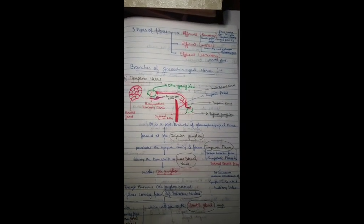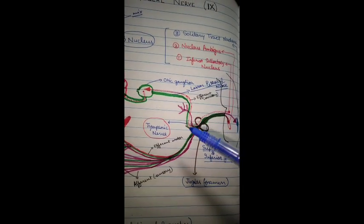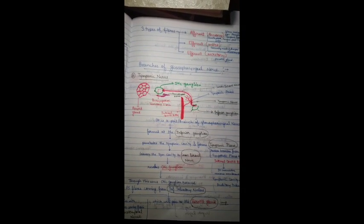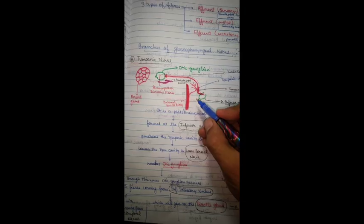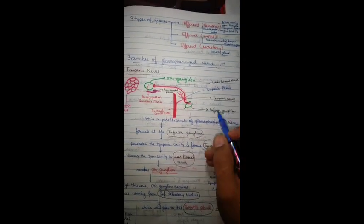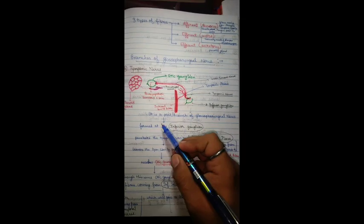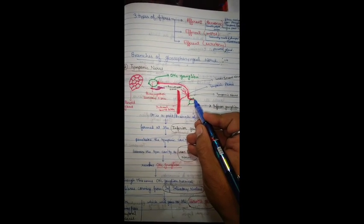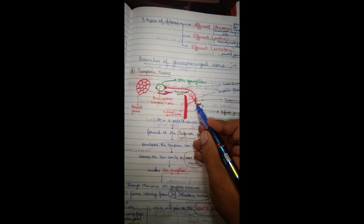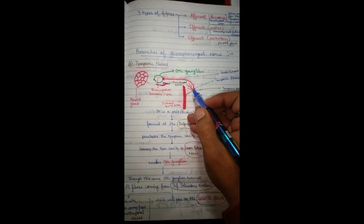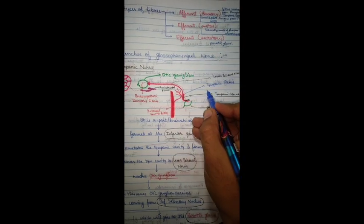Now we will learn about the branches of the glossopharyngeal nerve. The main branch is the tympanic nerve. It arises at the inferior ganglion, separates from the main glossopharyngeal nerve, penetrates the tympanic cavity, and forms the tympanic plexus, as you can see here.